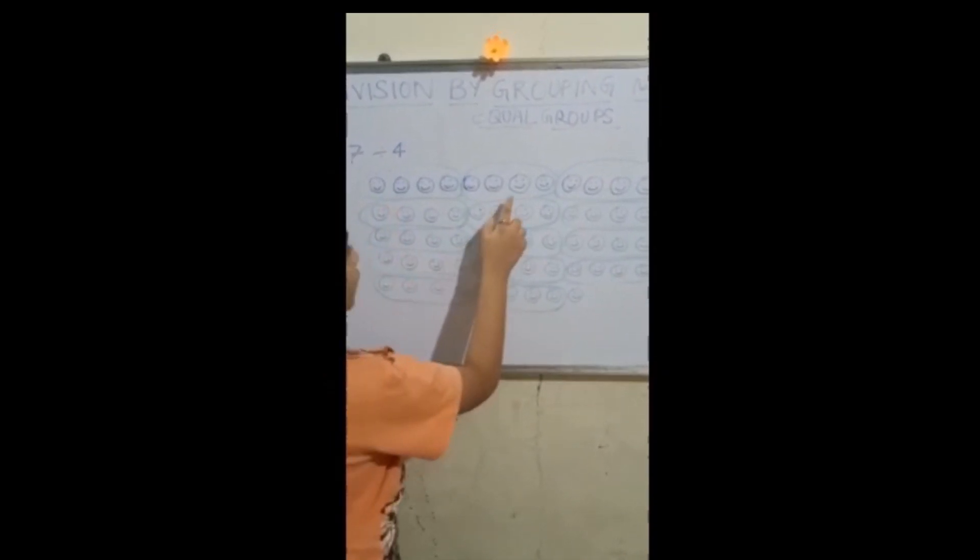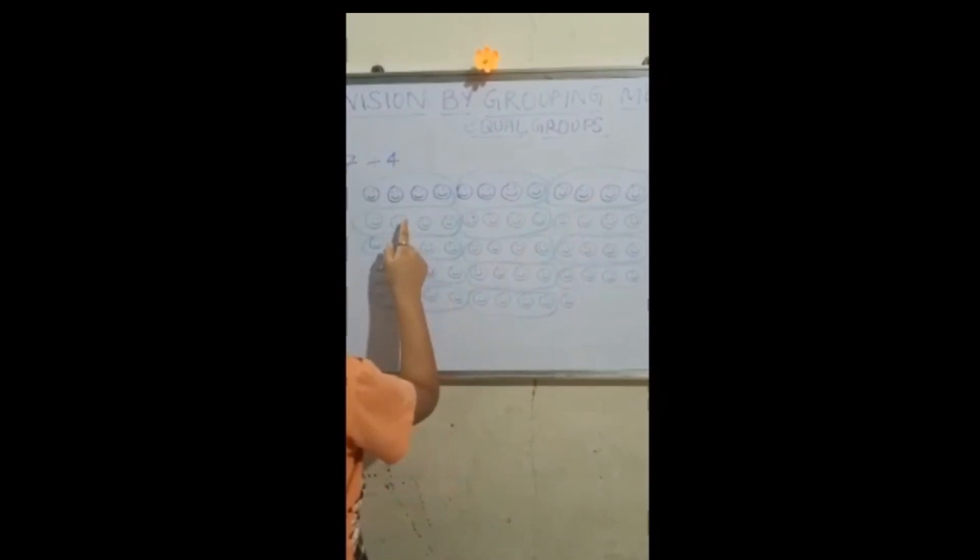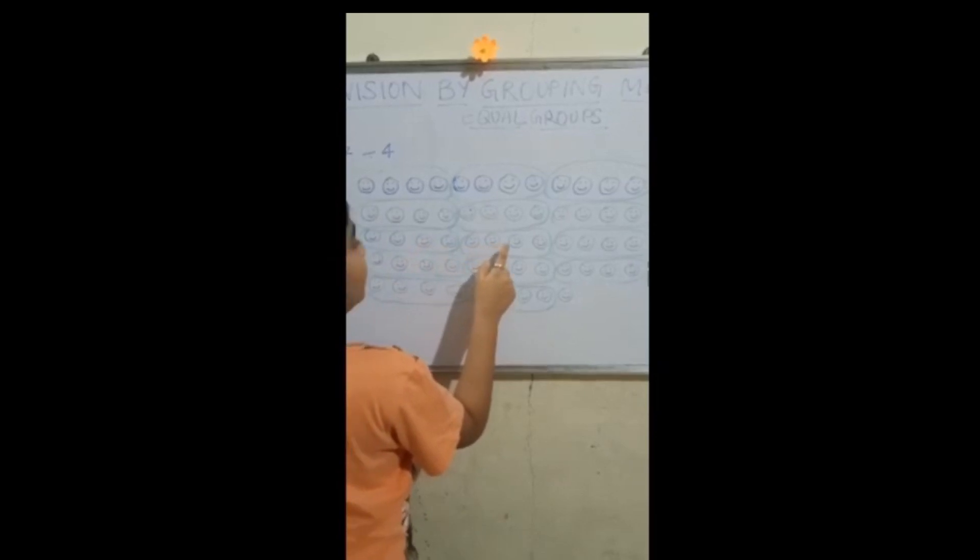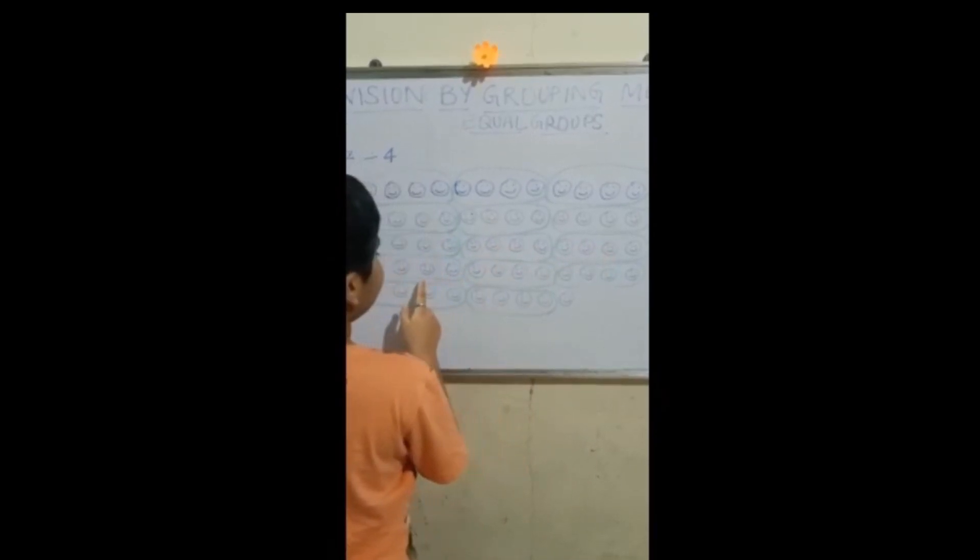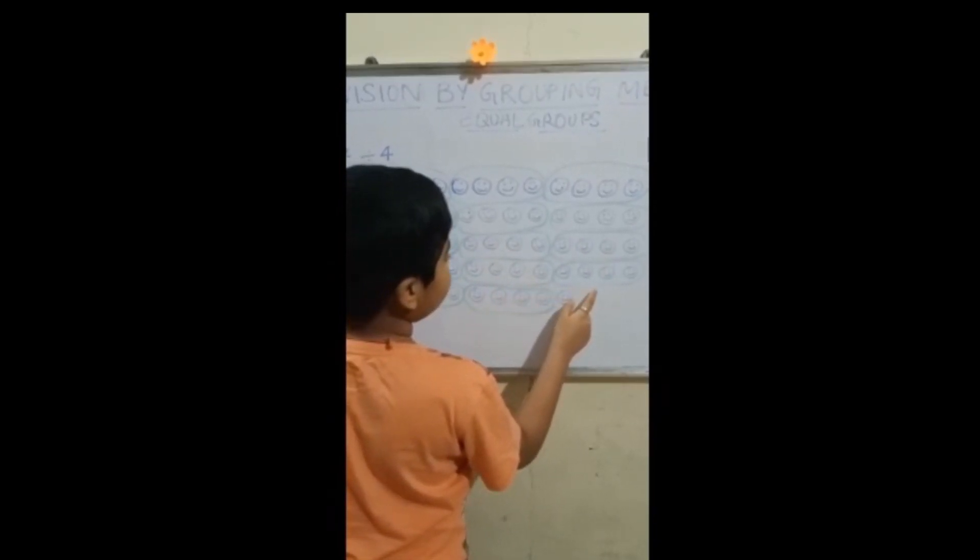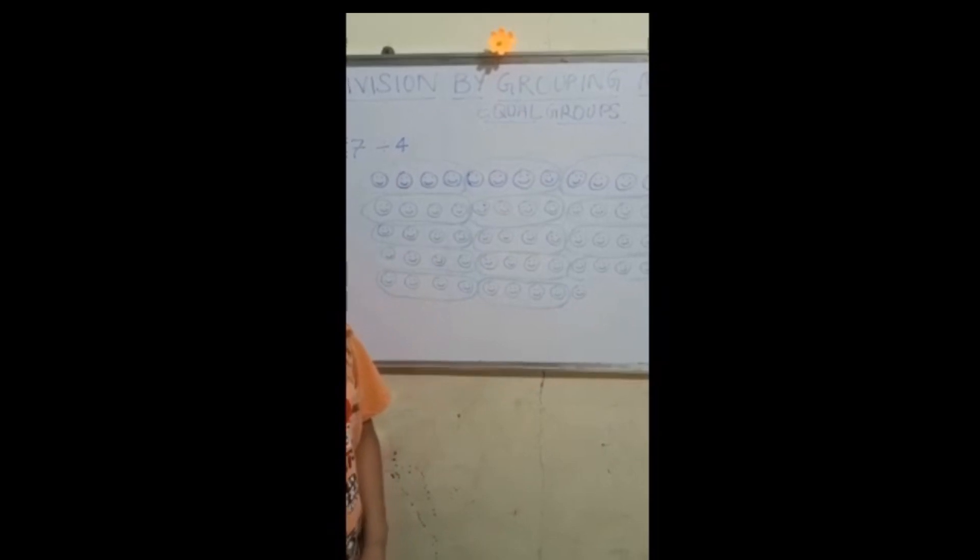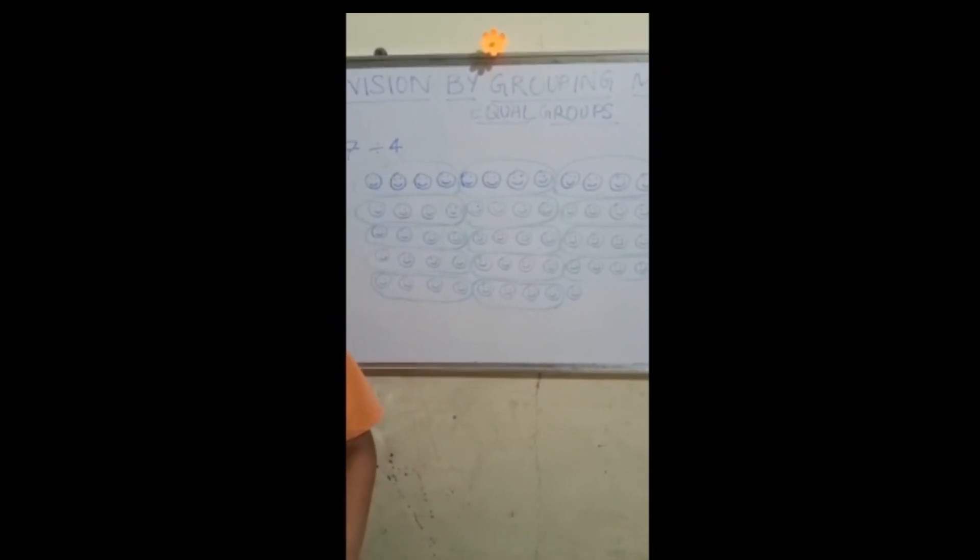1, 2, 3, 4, 5, 6, 7, 8, 9, 10, 11, 12, 13, 14. There are 14 equal groups.